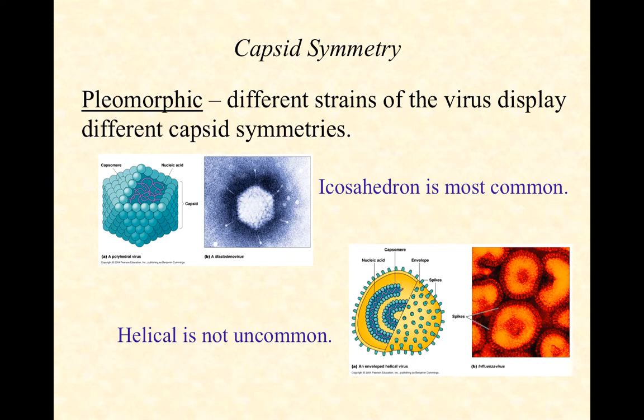Within a given strain, you're not going to have some variants that are icosahedral and others that are helical. For a given strain, it's genetically determined which of these two capsid symmetries will be produced. We call this condition pleomorphic — meaning many shapes, with two different possible capsid symmetries. You see the polyhedron on top, and on the bottom a sketch of an enveloped helical influenza virus.